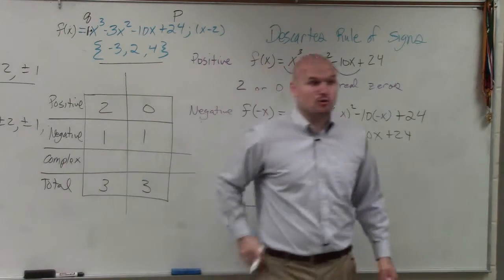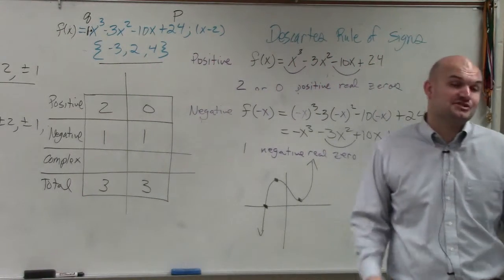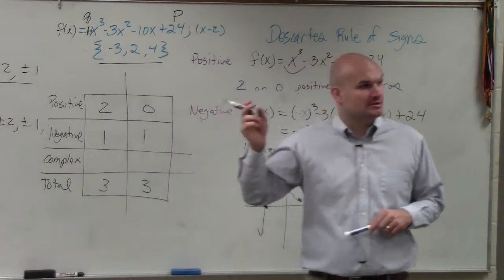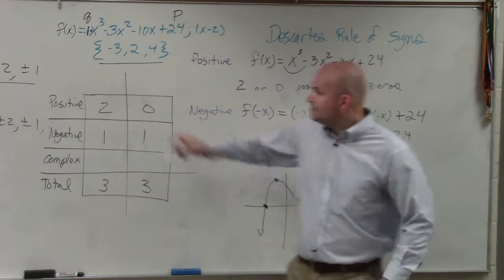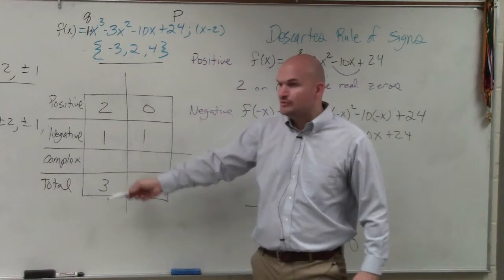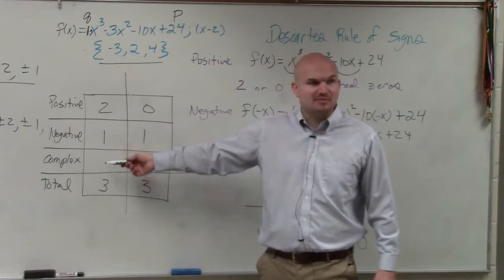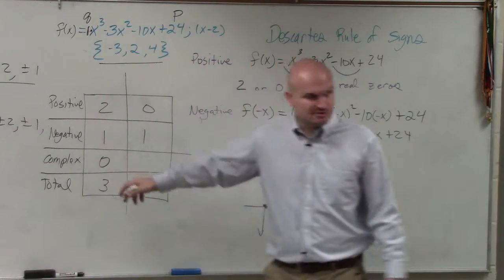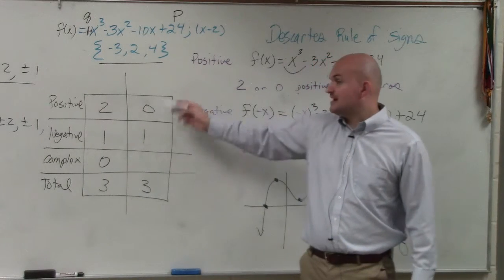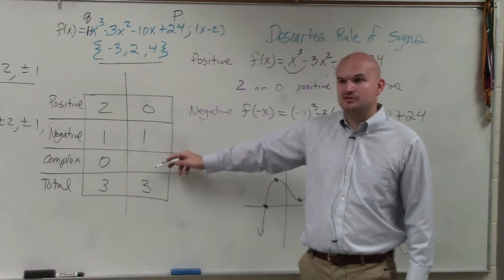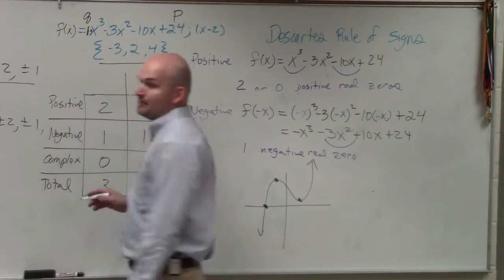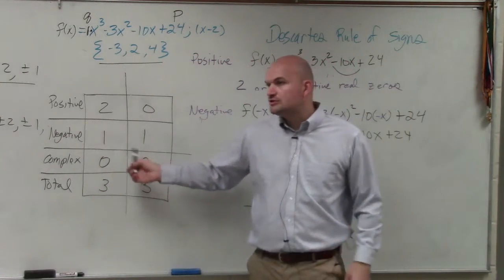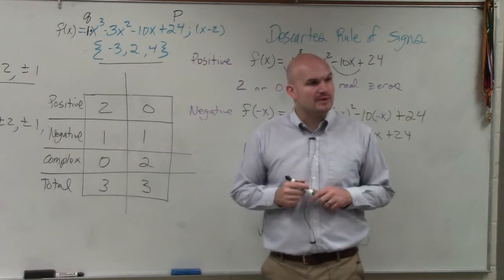Based on the fundamental theorem of algebra, how many total zero solutions do I need to have for this? Three. Three. So if I asked you, or if on your test it asks you, hey, what are the number of complex zeros for this polynomial? Well, if you have two positive, one negative, and you need three total, how many complex should you have? Zero. Because two plus one is three. Well, if you have zero positive, one negative, how many complex should you have? Two. So the answer to how many complex solutions are there would be two or zero.